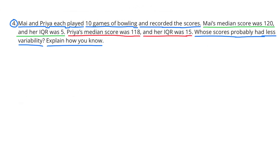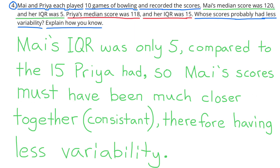Number four: Mai and Priya played ten games of bowling and recorded the scores. Mai's median score was 120 and her IQR was 5. Priya's median score was 118 and her IQR was 15. Whose scores probably had less variability? Mai's IQR was only 5 compared to Priya's IQR of 15, so Mai's scores must have been much closer together and more consistent. Therefore, Mai's scores had less variability.